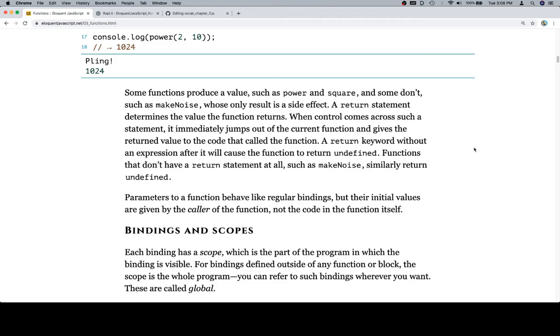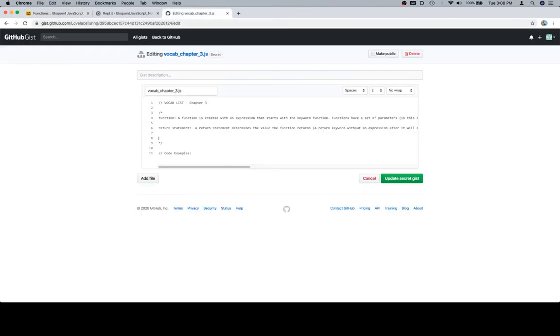Parameters to a function behave like regular bindings, but their initial values are given by the caller of the function, not the code in the function itself. This is a huge point. A lot of people get very confused with the idea that defining a function is different than calling it. So we'll go ahead and add this to our definitions list. We'll say parameters to a function, and that'll be there.